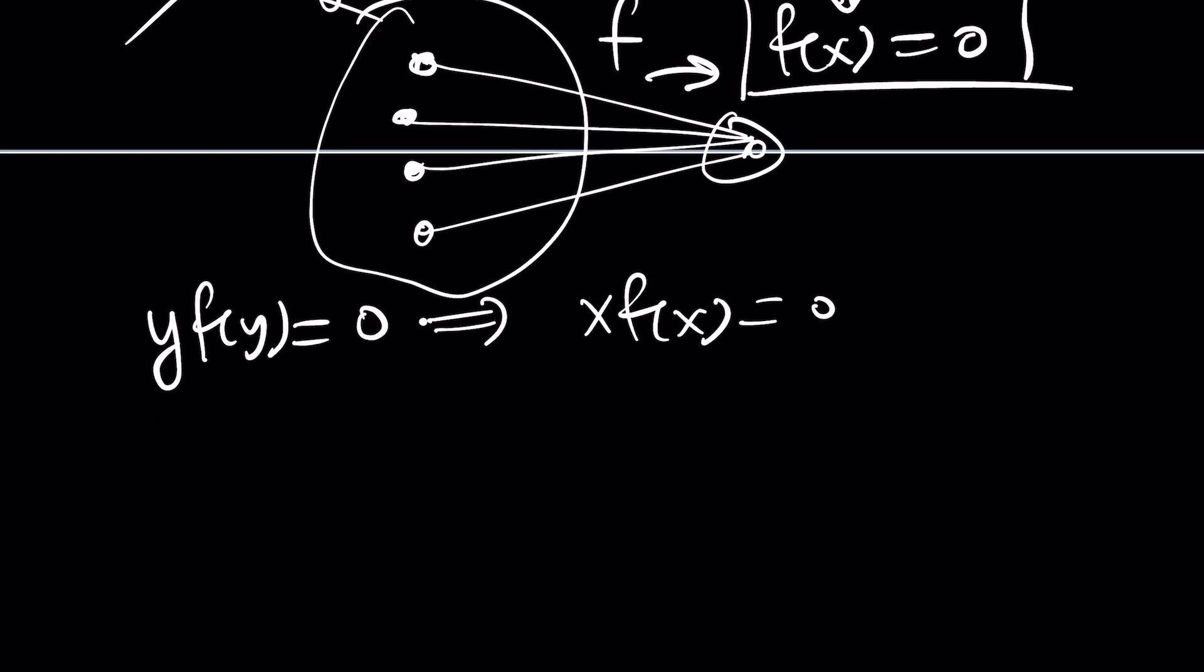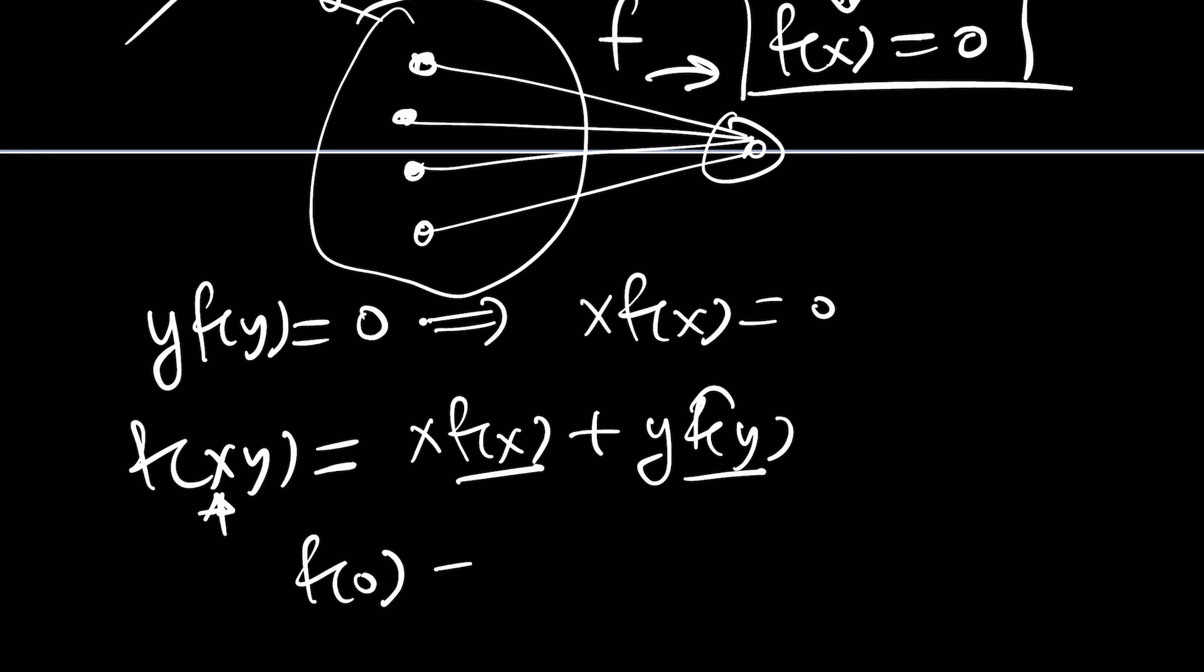If yf of y is zero, xf of x should also be zero, right? Because you can replace y with x. Now, in the original problem, we were given this. Always stick to the originals, okay? Because you're going to go back and forth. So if this is zero and that is zero, what's that supposed to mean? This means that when we got, when x or y is zero, we got f of zero. f of zero is equal to zero. That make sense? Okay.